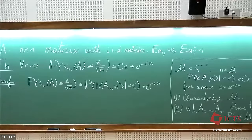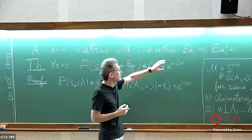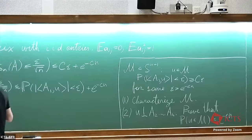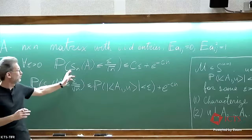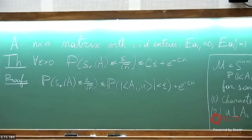Last time we considered a square random matrix with i.i.d. entries which are centered and of unit variance, and say bounded — although it's not needed. We were proving the bound for the smallest singular value: for any epsilon, the probability that the smallest singular value is bounded by epsilon over square root of n is bounded by this sum. This is a good inequality — it should tell a story, pointing to some qualitative phenomenon, and this one does.